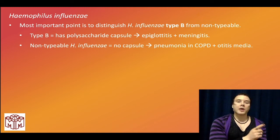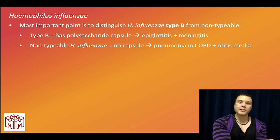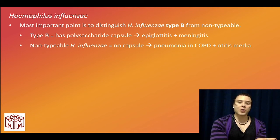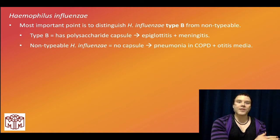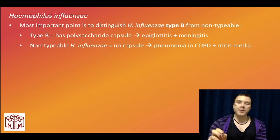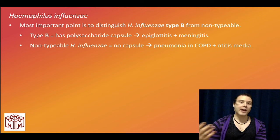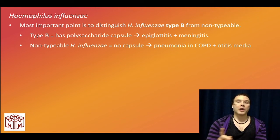HIB can cause epiglottitis — thumbprint sign, medical emergency, need to intubate. It can also cause meningitis, classically in patients of immigrant status, the implication being no vaccination history. Whereas regular non-typable Haemophilus influenzae can cause otitis media (a common cause along with Strep pneumo), and non-typable H. influenzae can also cause pneumonia in COPD.